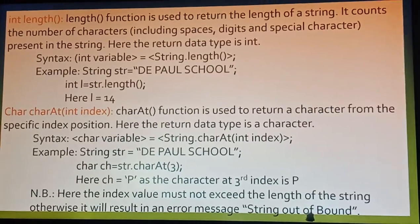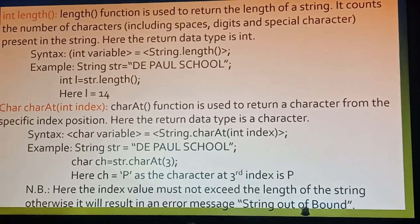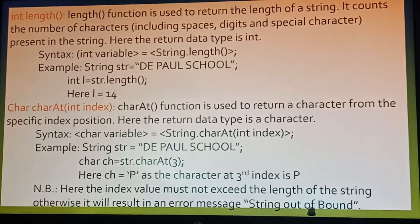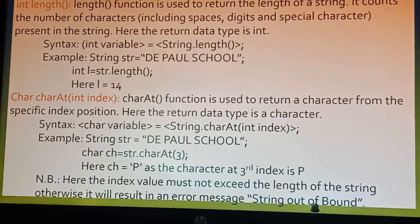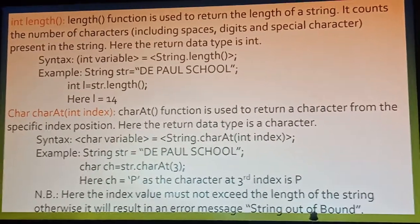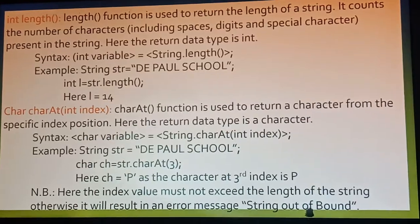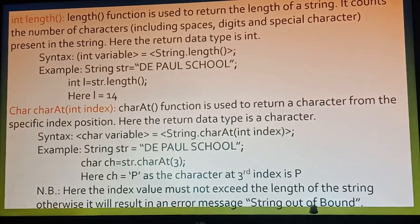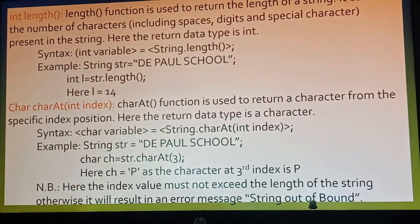So the value of i becomes 14. Now we will discuss charAt. The charAt function is used to return the character from a specific index position. Here the return data type is a character. The syntax: the variable should be declared with a character, followed by charAt, then the index value which is a number, then semicolon.